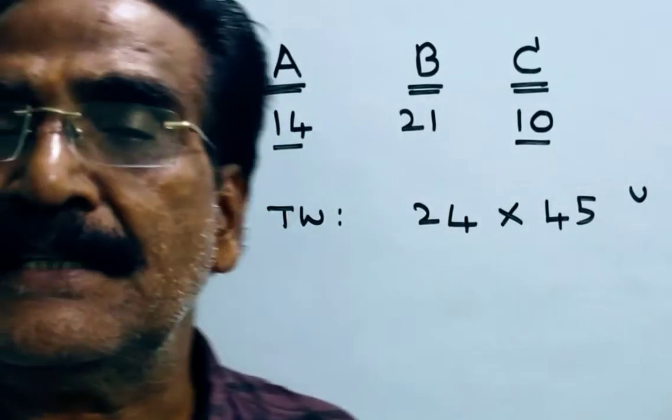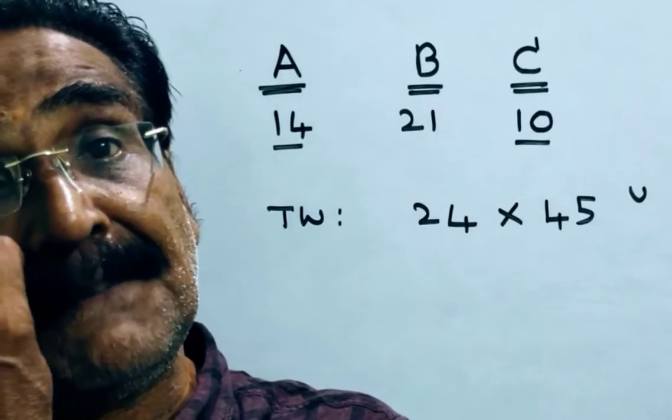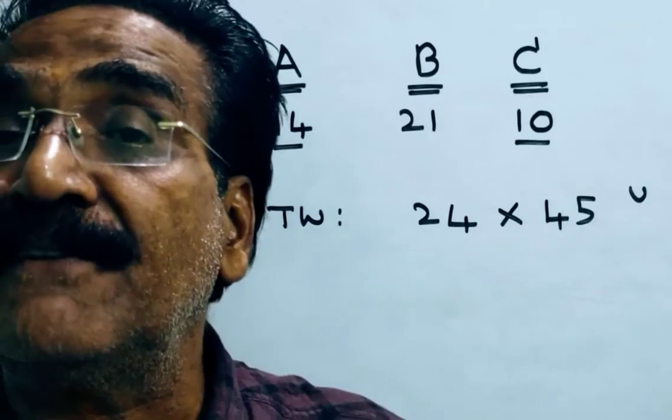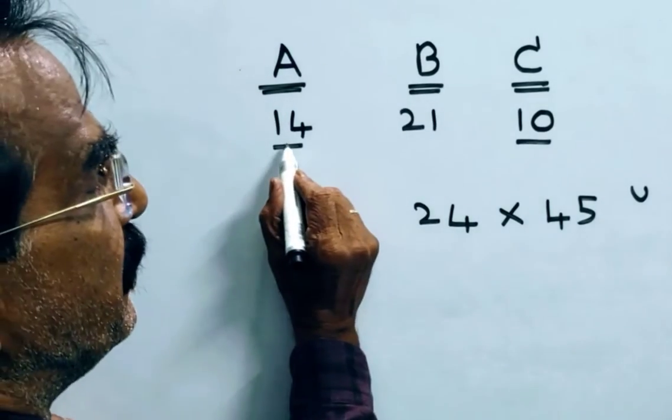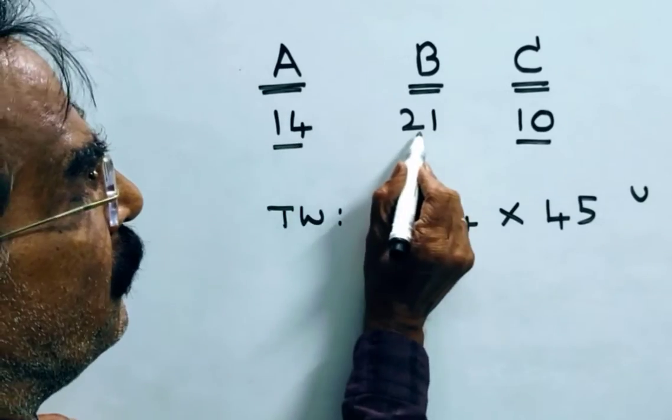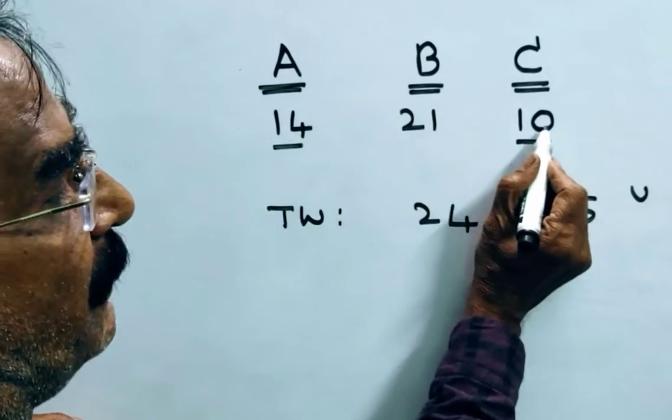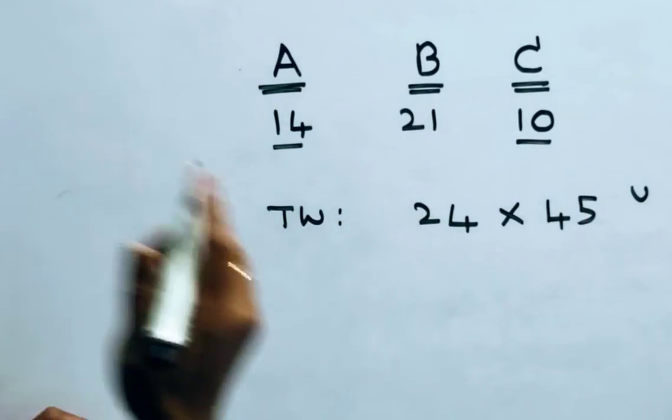Now, the question is, in how many days A plus B plus C together can complete 50% of work? A plus B plus C together can do 14 plus 21, 35 plus 10, 45 units.